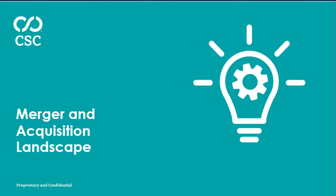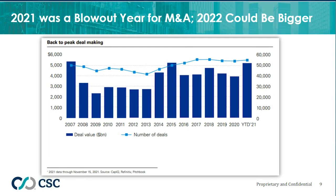Now we'll get started with the merger and acquisition landscape. 2021 was what we call a blowout year for M&A. It easily beat the pre-pandemic level of M&A activity, nearly matching the peaks in 2015 and 2007. In 2021, $5.1 trillion worth of M&A activity was recorded. There were three main things driving the activity: very easy access to capital, low interest rates, and a recovering global economy after the pandemic.